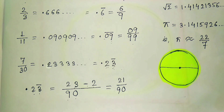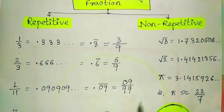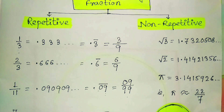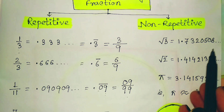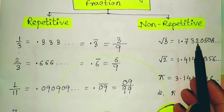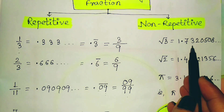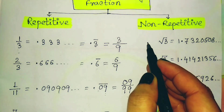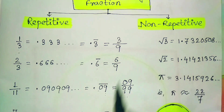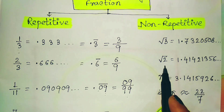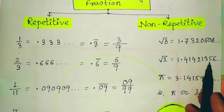Non-repetitive numbers are of the type 0.17320508... continuing to infinity — this is the value of √3. If you calculate √3, you get this decimal where you cannot predict the next digit. These numbers cannot be expressed in p/q form. Similarly, √2 = 1.41421356... continuing without any pattern.